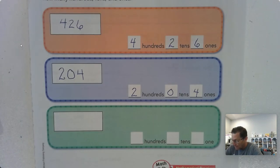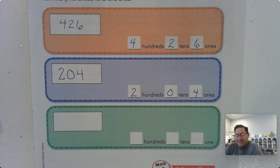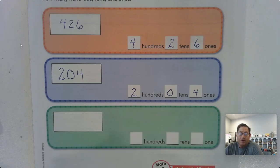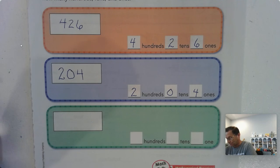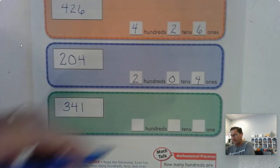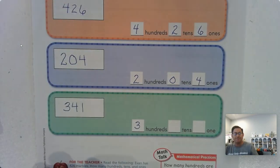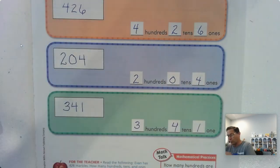One more. Let's imagine that Evan has 341 marbles. How many hundreds, tens, and ones are in the number 341? Go ahead, pause on the video, write the number, and write how many hundreds, tens, and ones. The answer is 341 — three hundreds, four tens, and one one.